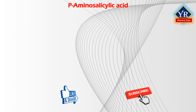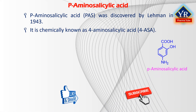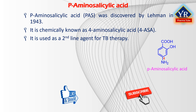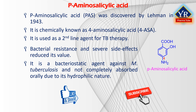The next drug is paraaminosalicylic acid, abbreviated PAS, discovered by Lehman in 1943. Chemically, it is known as 4-aminosalicylic acid — a salicylic acid possessing an amino group at the fourth position. It was the first effective treatment for tuberculosis but is used as a second-line drug today. A combination of bacterial resistance and severe side effects has greatly reduced its value. It is a bacteriostatic agent against mycobacterium tuberculosis and is not completely absorbed orally due to its hydrophilic nature as dictated by the functional groups attached to the benzene ring.